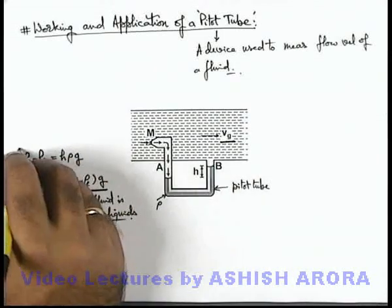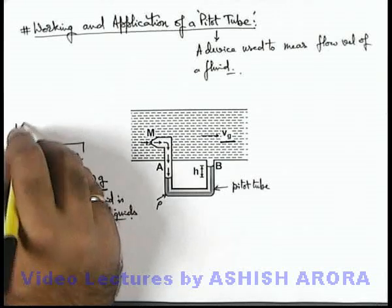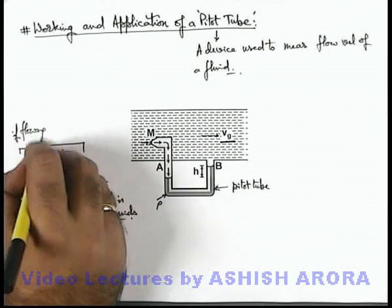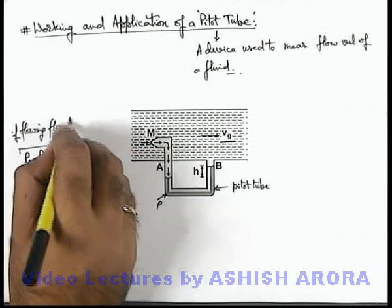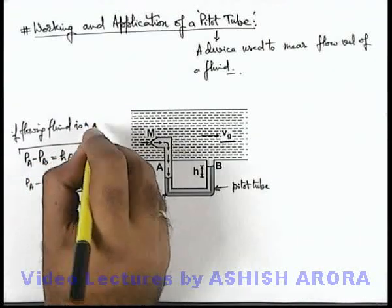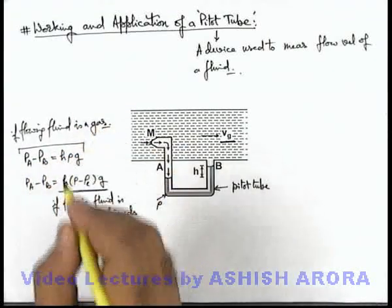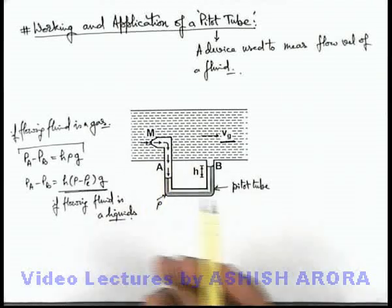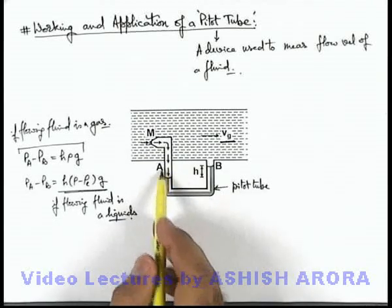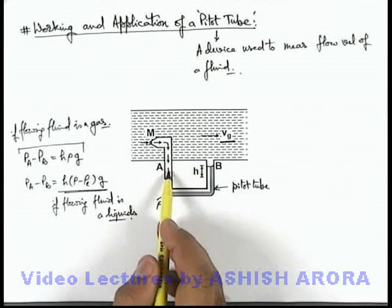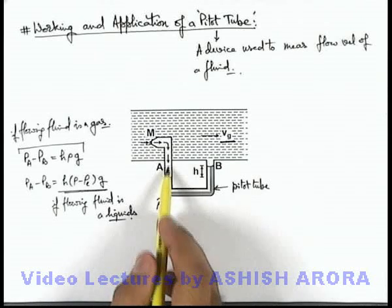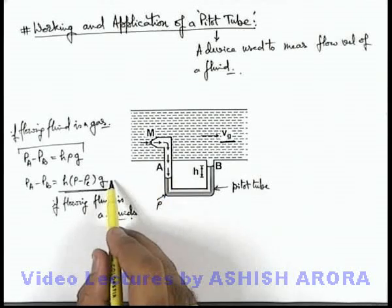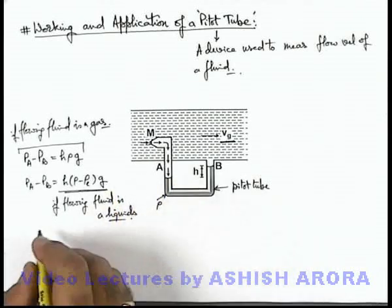Because in case of liquids we can never ignore gravity. But this is the situation we can use if flowing fluid is a gas. Because in case of gaseous media we can say the effect of gravity is negligible, so we won't consider any pressure difference due to the height h of this gaseous column, but in case of liquid it has to be taken.